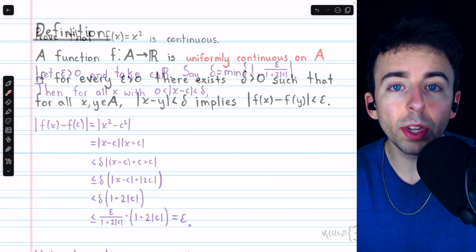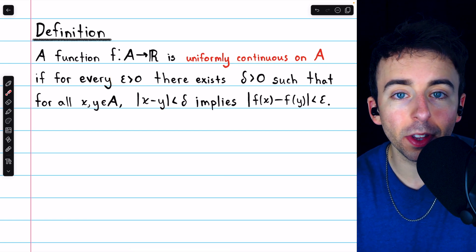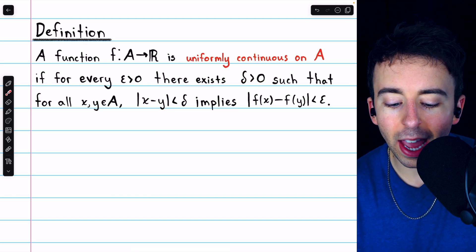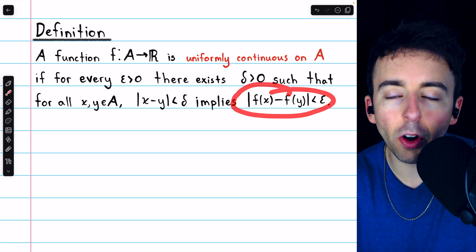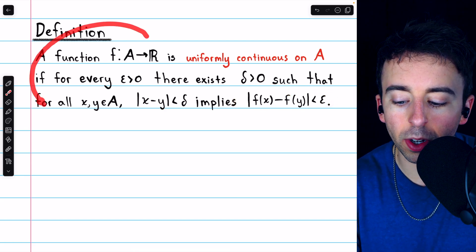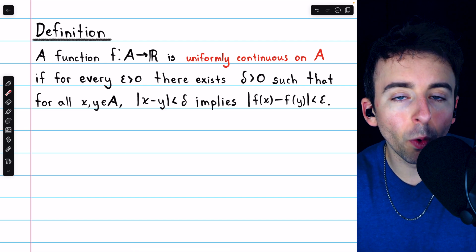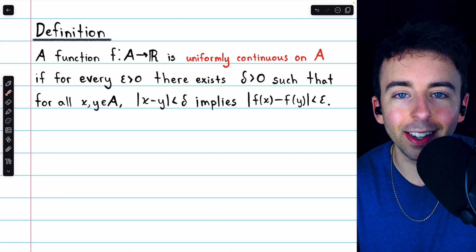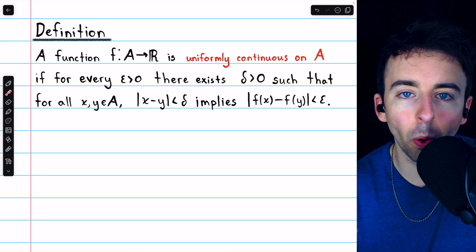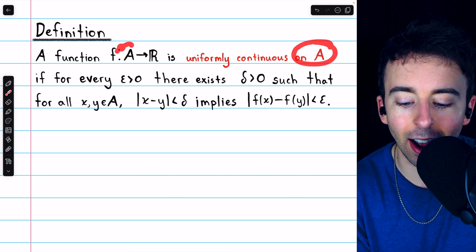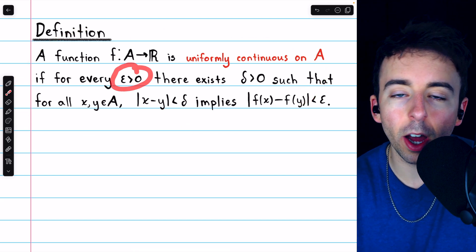Now let's see the actual definition. We say that a function f on a set A is uniformly continuous if for every epsilon greater than zero, there exists a delta greater than zero, so that any two numbers from the domain being within delta of each other will have images under the function that are within epsilon of each other. One big difference you should notice compared to the epsilon-delta definition of standard continuity: for a uniformly continuous function, the delta doesn't depend on c. And so it shouldn't be a surprise that in the definition of uniform continuity, we don't see a single point c.